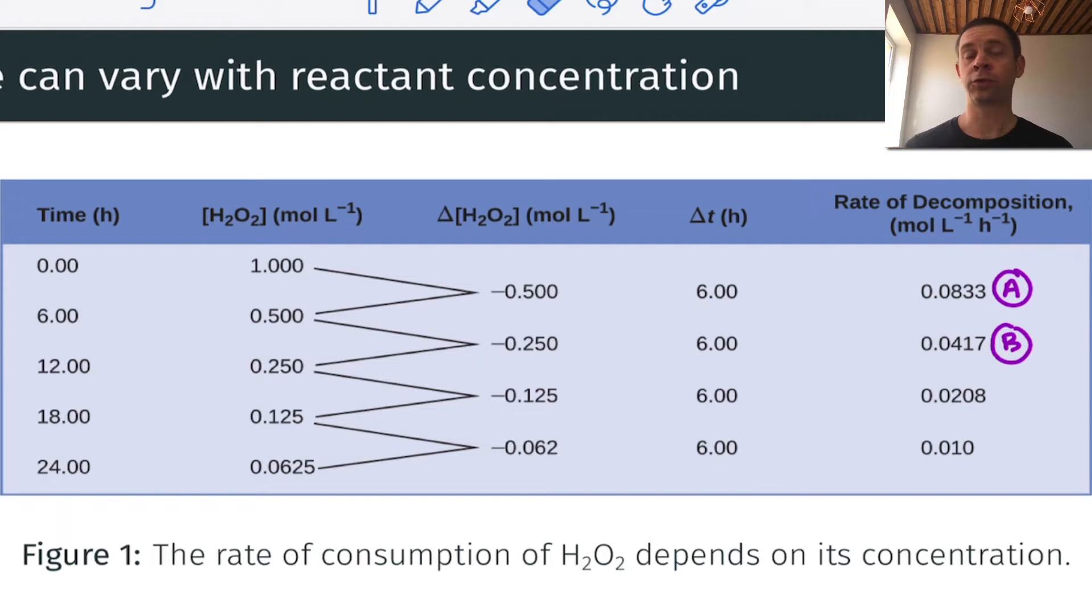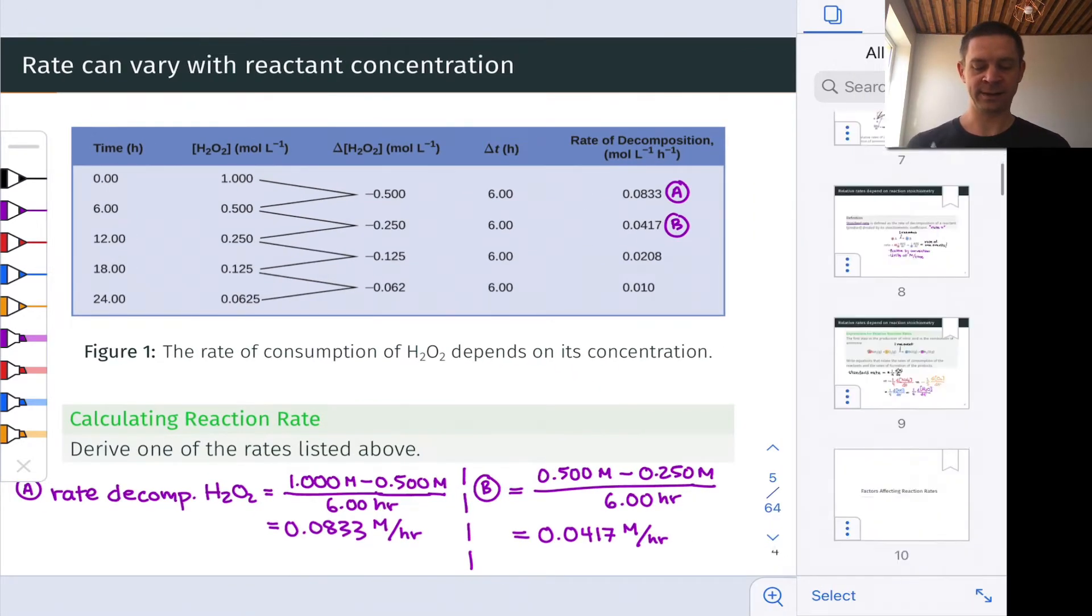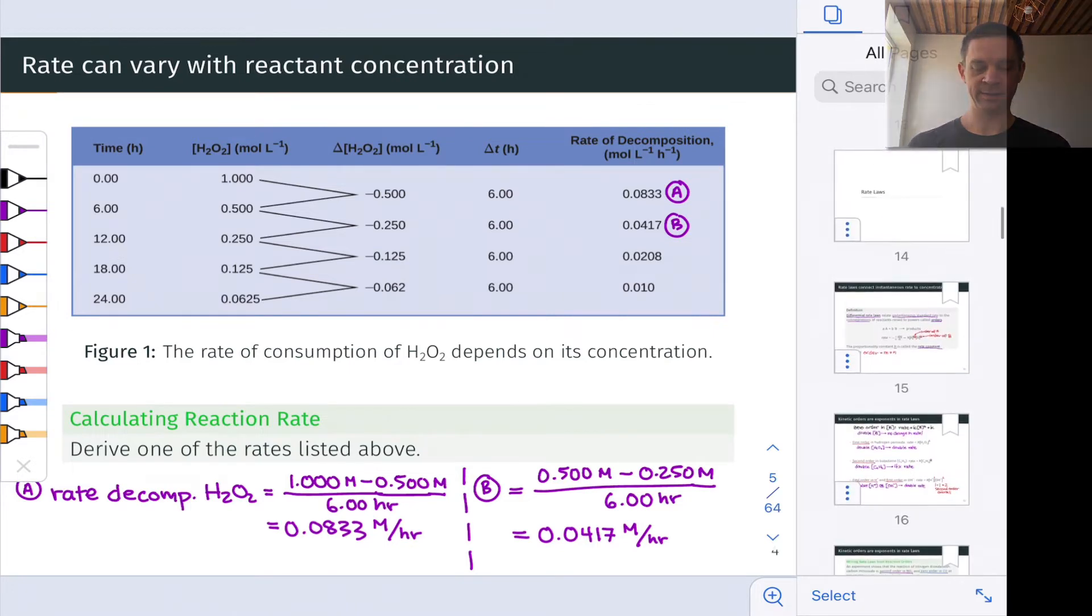This is an example of what we'll call first order kinetics or first order behavior, and it's one of three possible kinetic orders that are most important to us in this video. So what exactly we mean by kinetic order, how the rate law helps us sort through all this is the subject of this video.